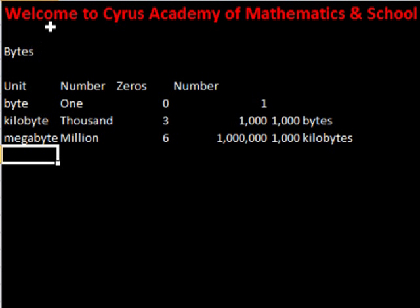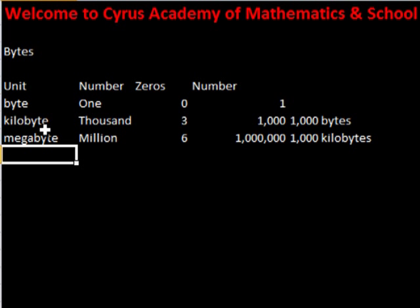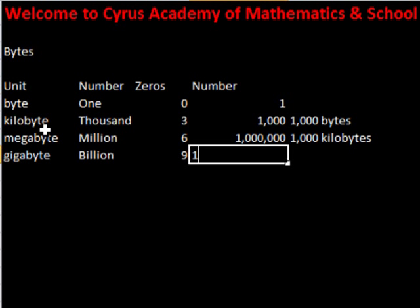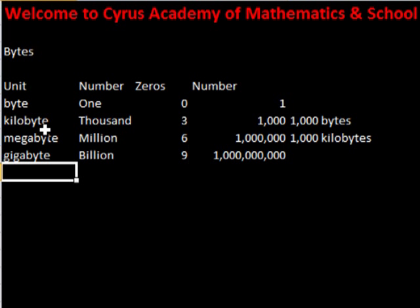Next is a gigabyte. It has a billion. And it has nine zeros. It has a thousand — I mean megabytes in it.